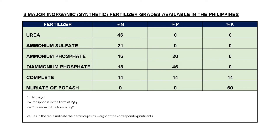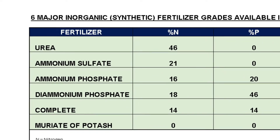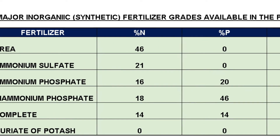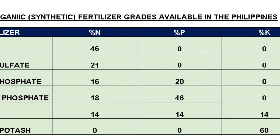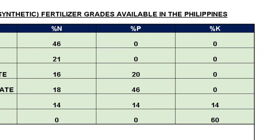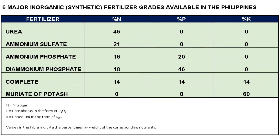Let's take a look at this table. This table shows the nutrient contents of the six major synthetic fertilizers available in the Philippines. The second column shows the percentage of nitrogen content by weight, while the third and fourth columns provide the percentages by weight of phosphorus and potassium, respectively. Urea and ammonium sulfate provide only nitrogen, with 46 and 21 percent contents by weight, respectively. Ammonium phosphate and diammonium phosphate provide a mixture of nitrogen and phosphorus. Complete provides a balanced mix of nutrients with 14 percent of each of the three primary nutrients, while myriad of potash provides only potassium, with a 60 percent rate.